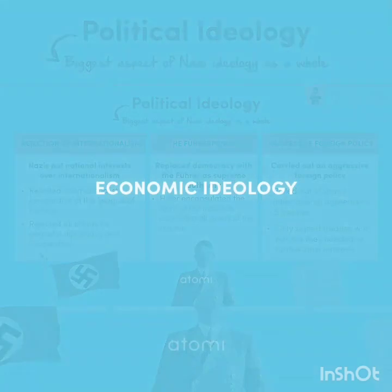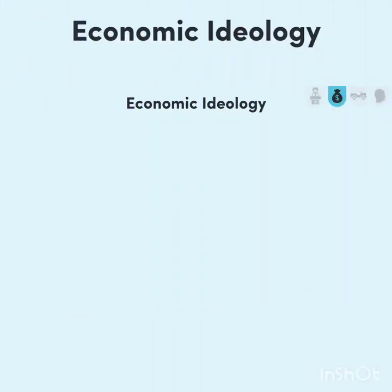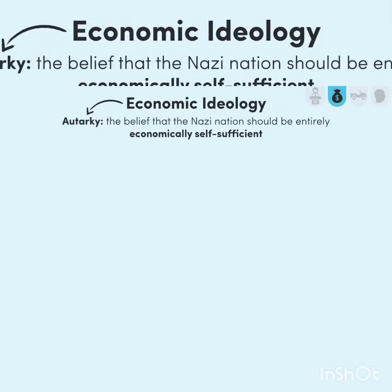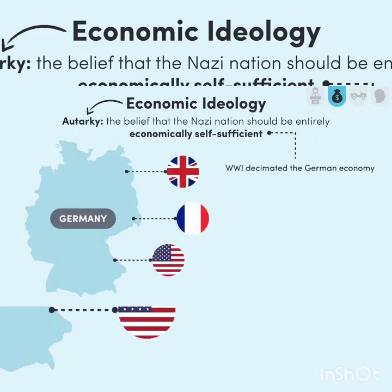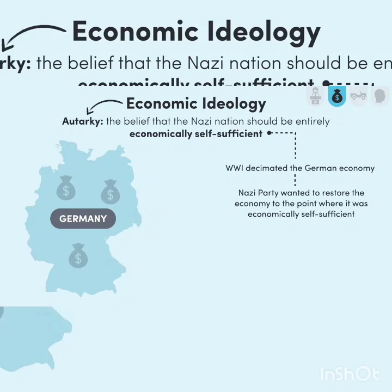Next, Nazi economic ideology. The key concept here is Autarky — a German word meaning national self-sufficiency. This was the belief that the Nazi nation should be entirely economically self-sufficient. Remembering Germany's terrible economic position after World War One, Nazi Germany dreamed of restoring their economy to the point where they no longer depended on other countries. Autarky is essentially the economic dimension of the same inward-looking, anti-internationalist ideology seen in their politics.